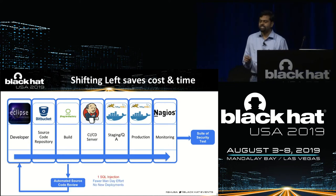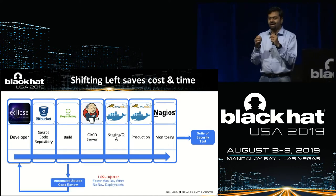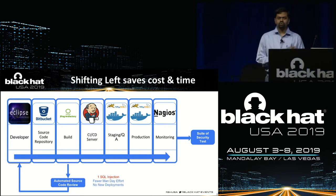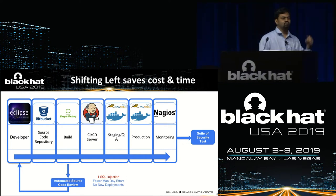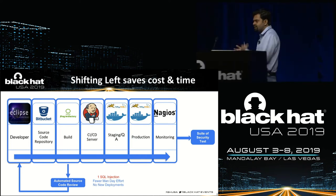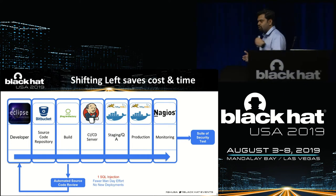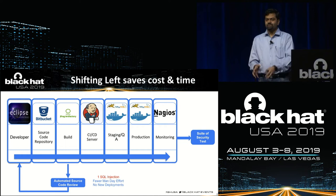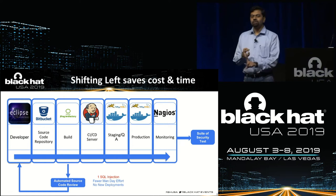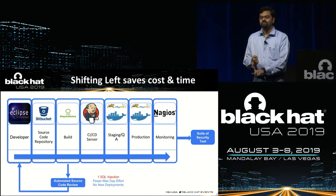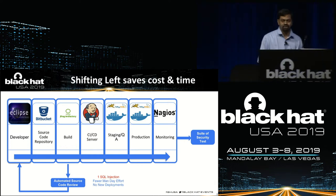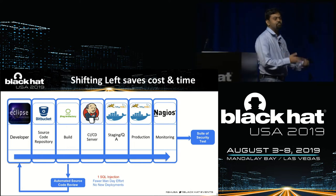Whereas if you shift this slightly — say, around the build step you do automated source code review — and for example one SQL injection is found, that step happens very close to the developer. As soon as the developer commits the code, it goes to the build process, automated code review happens, a bug is found and reported. Instead of wasting time in other processes, you immediately start mitigating it. And there's a safety feature: the build does not proceed, there's no deployment, so you're safe from that bug being exposed to the public.